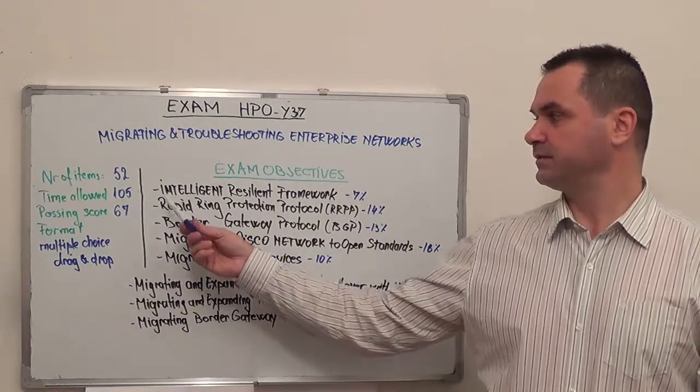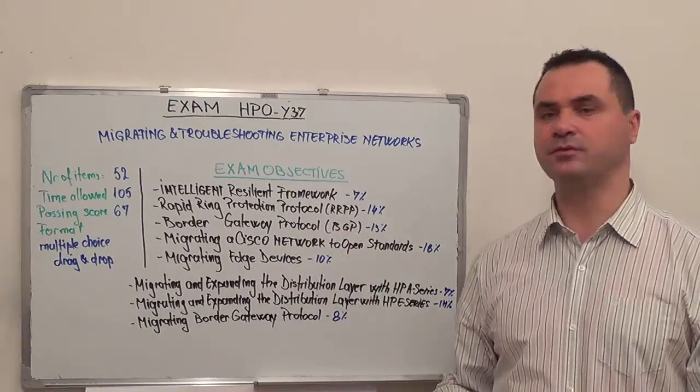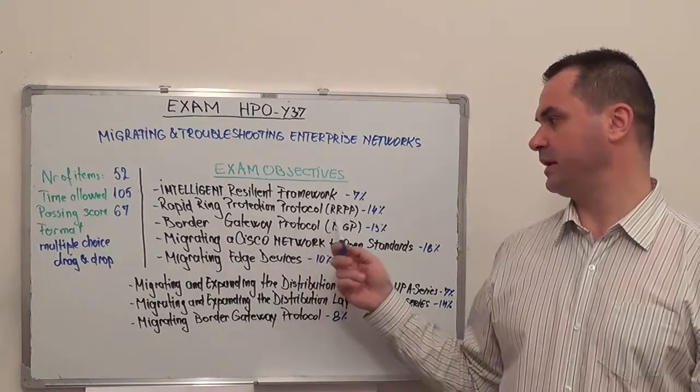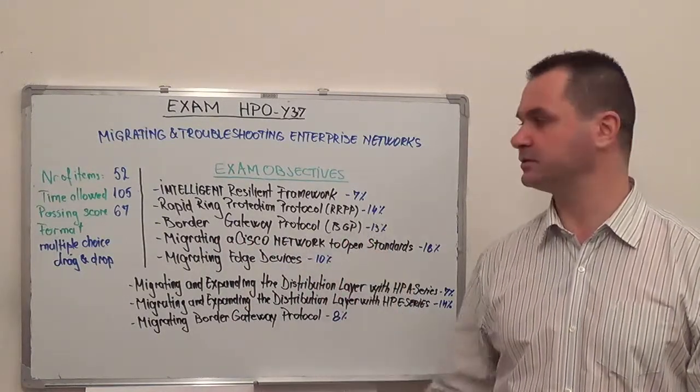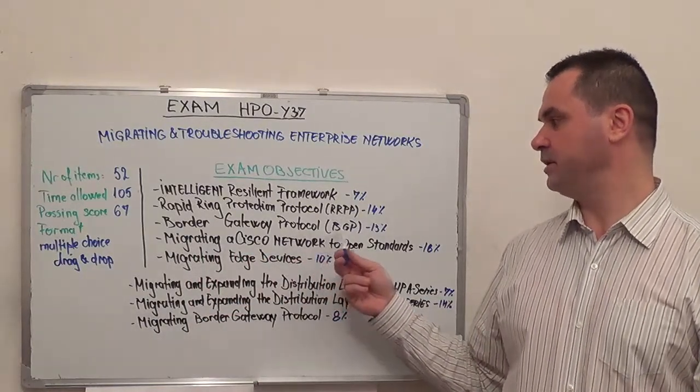First, you have to understand Intelligent Resilient Framework. Then, Rapid Ring Protection Protocol, followed by Border Gateway Protocol.